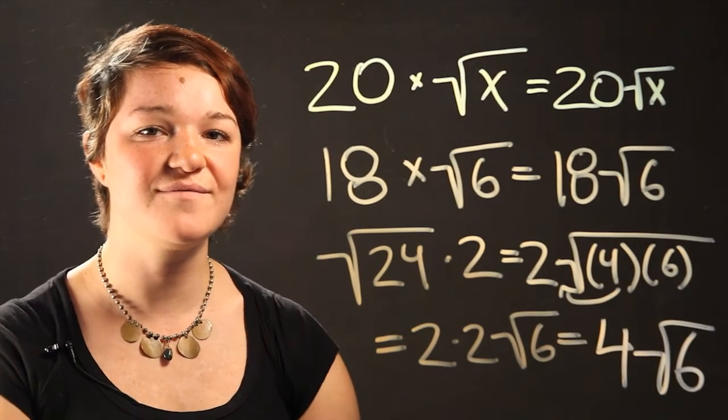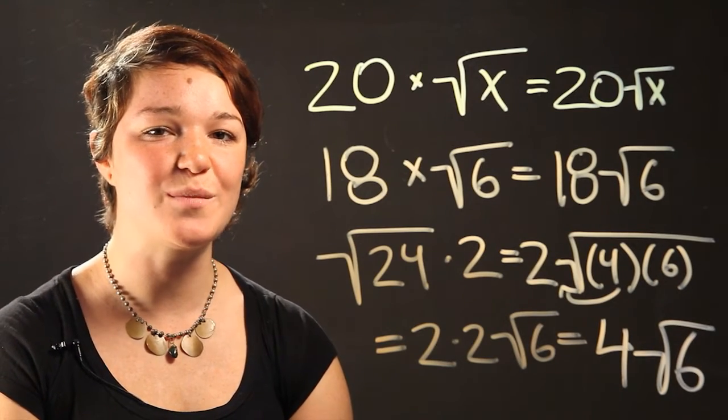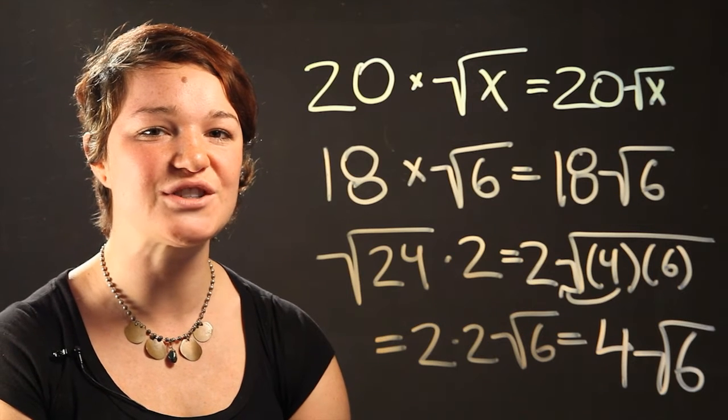There you have it. That's how you multiply a whole number by a radical. Thanks for watching. I'm Dr. K.